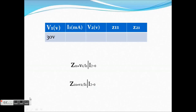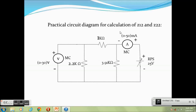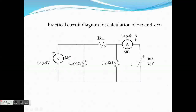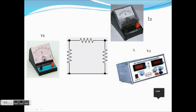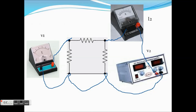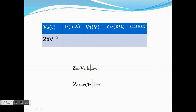Practical circuit diagram for calculation of Z12 and Z22. The apparatus required are an ammeter of range 0 to 50 mA, a voltmeter of range 0 to 30 volts, and a regulated power supply of 25 volts. Connect the positive terminal of RPS to the positive terminal of the ammeter and the negative terminal to node 1 of the pi network. Connect node 2 to the positive terminal of the voltmeter and the negative terminal to node 3 of the pi network. Connect node 3 and node 4 of the pi network, and node 4 to the negative terminal of RPS. Maintain RPS at 25 volts and note the readings I2 and V1 in the table.